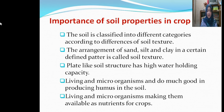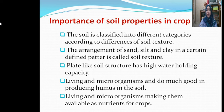Paddy grows well in clayey soil due to its high water holding capacity. Sandy soil grows groundnut, potatoes, watermelon, etc. The proportion of sand, silt and clay in a certain defined pattern is called soil texture. Granular and crumbly soil structure is more favorable for crop cultivation. Plate-like soil structure has high water holding capacity.